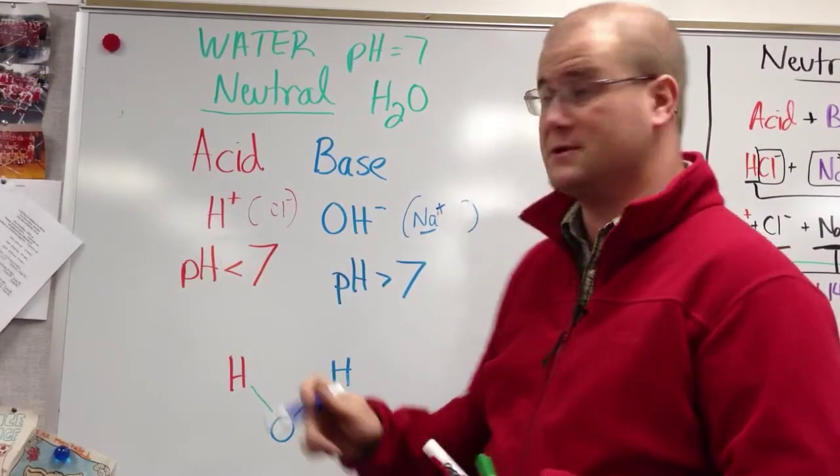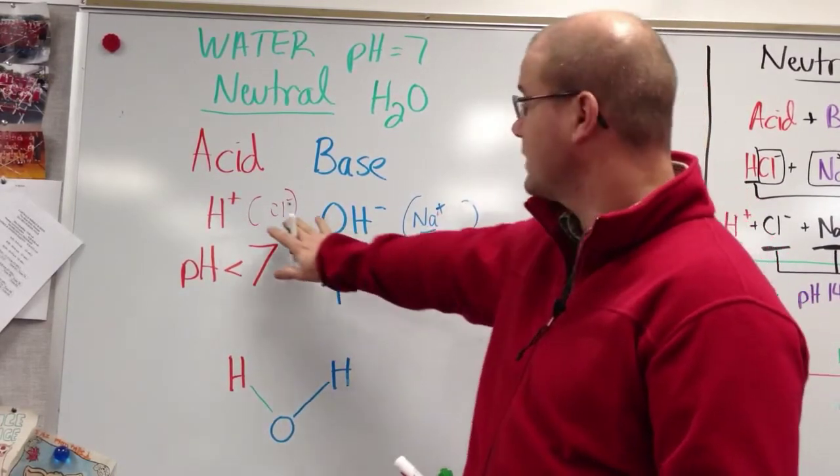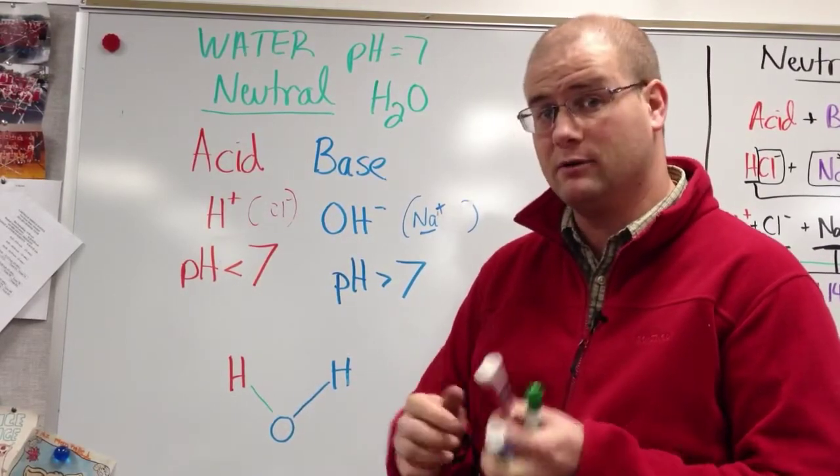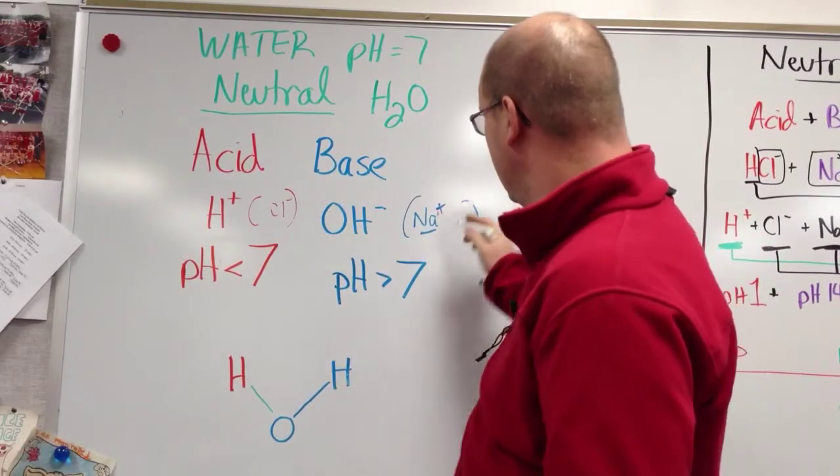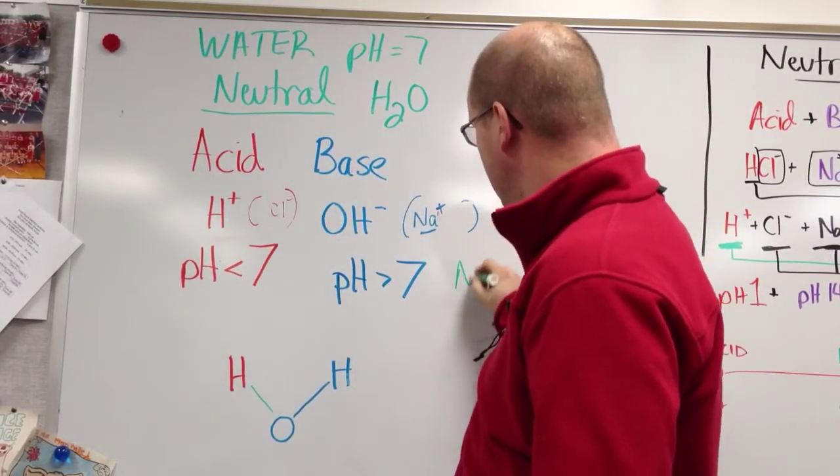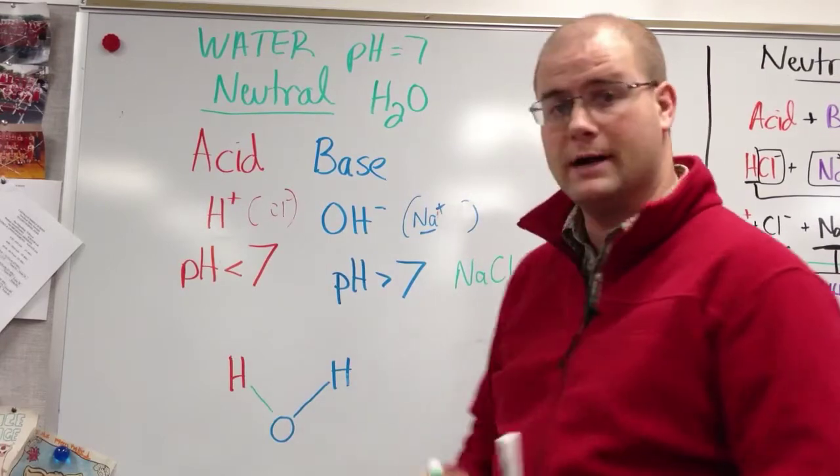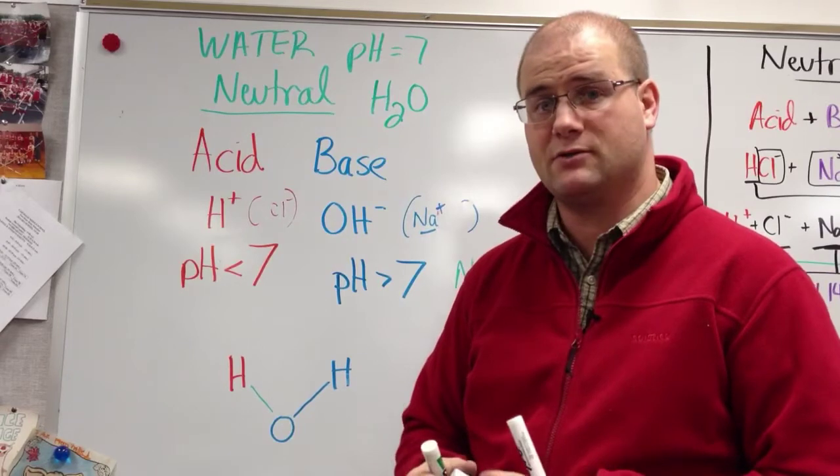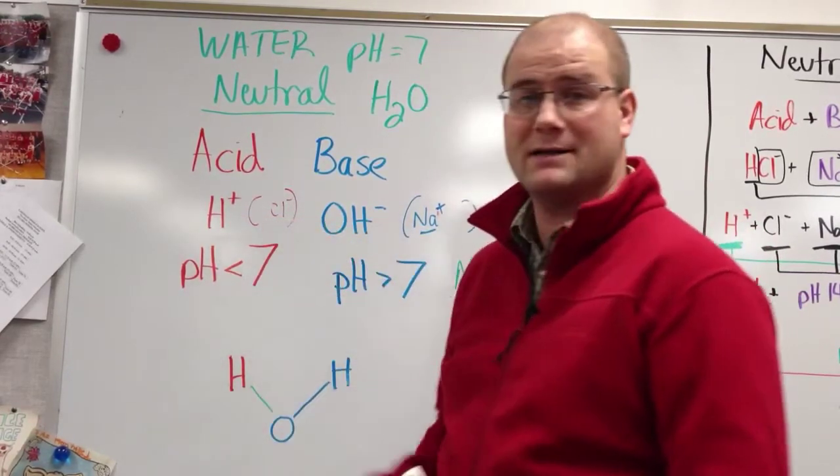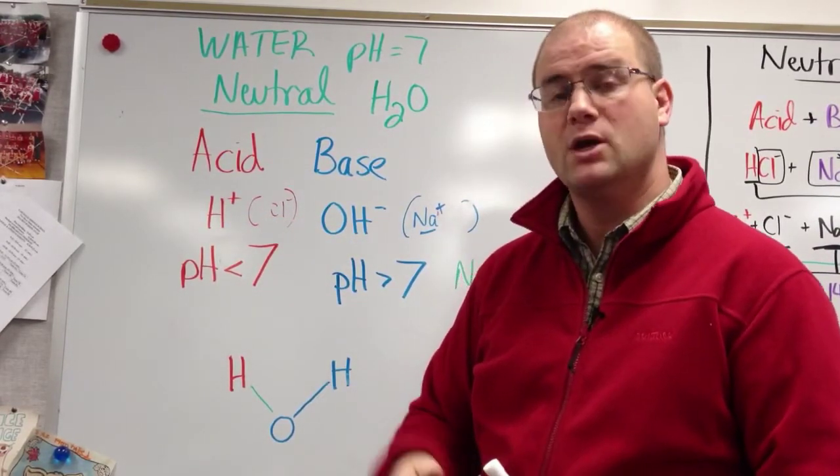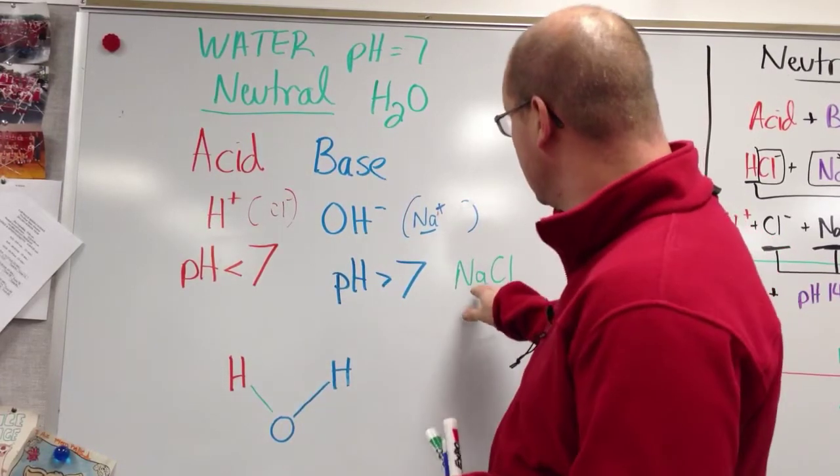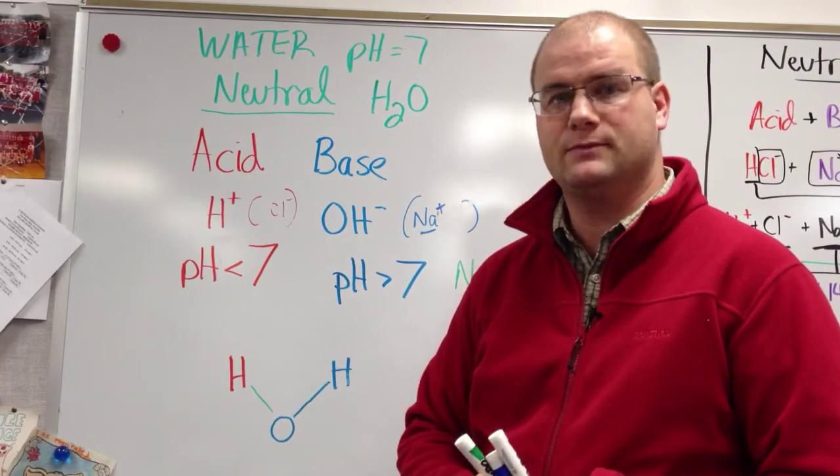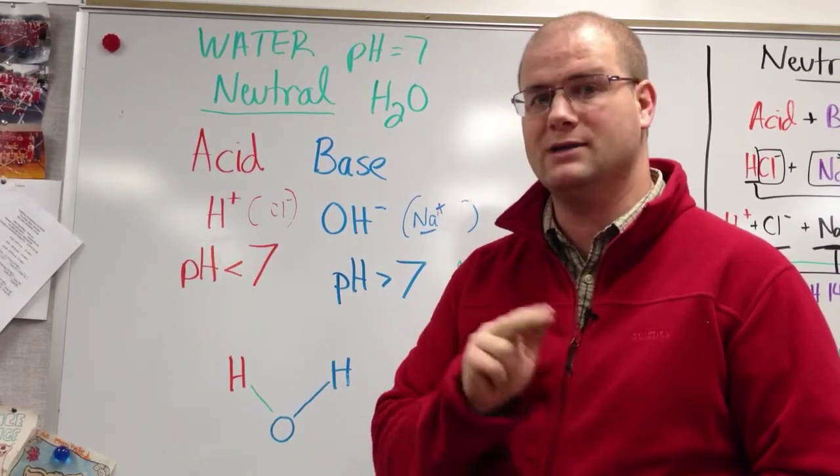So those two are opposites. Na+, Cl-, so they're going to interact with each other to make a second chemical. So we've got our water, and now we're going to get sodium chloride. That's table salt. So table salt is a byproduct of a neutralization reaction, specifically with hydrochloric acid and sodium hydroxide. So that acid and that base will make this salt, sodium chloride, as a byproduct of the neutralization. So acid plus base equals water and salt.